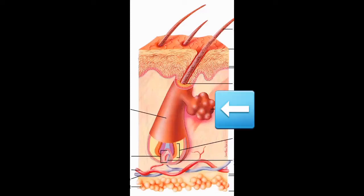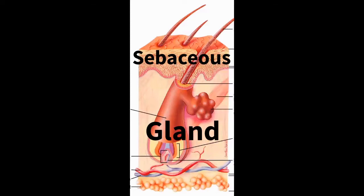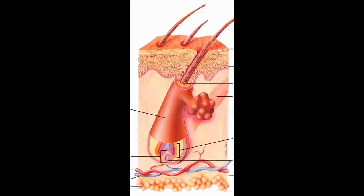This structure next to the hair follicle is another accessory structure and its own organ called a sebaceous gland, or an oil gland. These glands will always be connected to a hair follicle, and they will release sebum into the hair follicle to keep it moisturized. They will be activated during puberty.